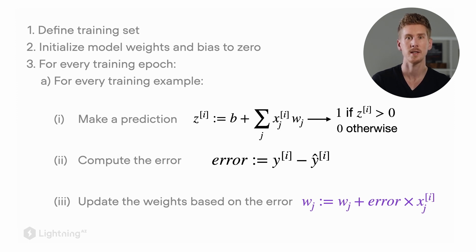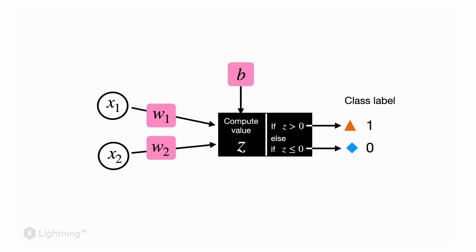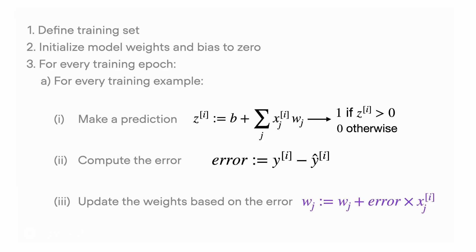Remember though, next to the weight parameters we also have this bias unit. How do we update this bias unit? The update of the bias unit is actually very similar to the weight update, except since the bias unit does not correspond to a given input feature, the update is just the original bias value plus the error term.